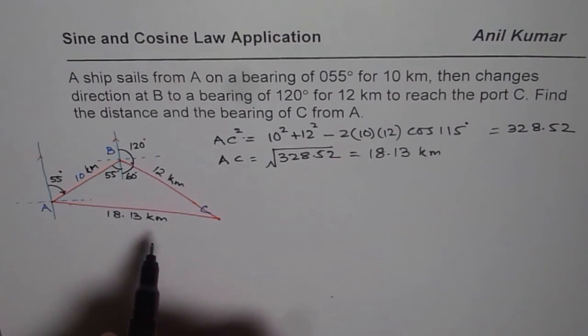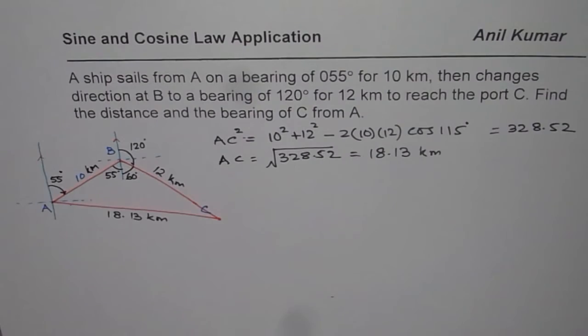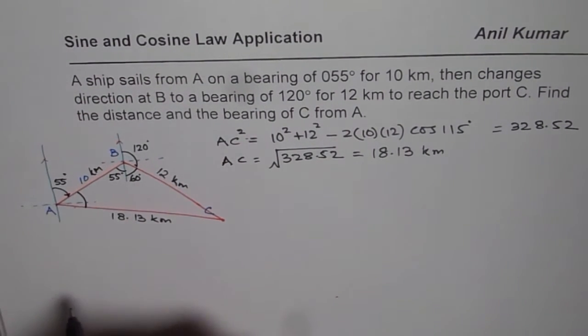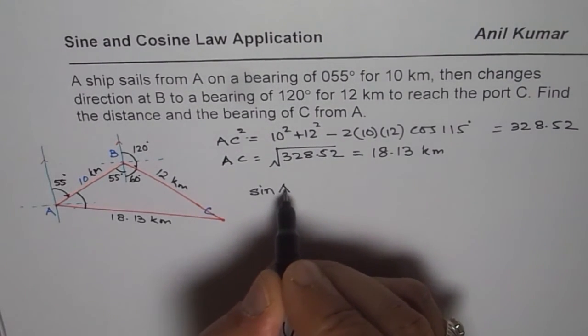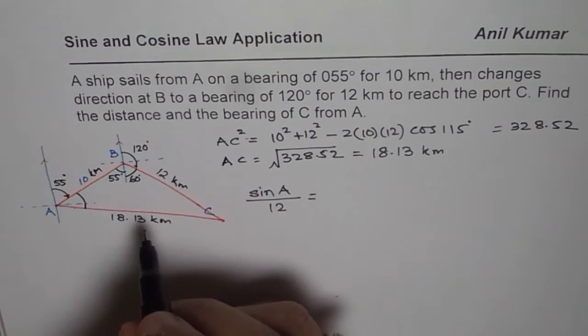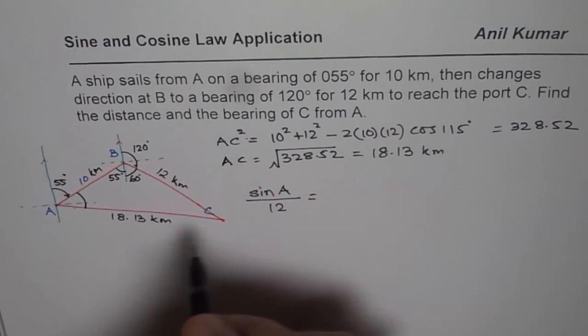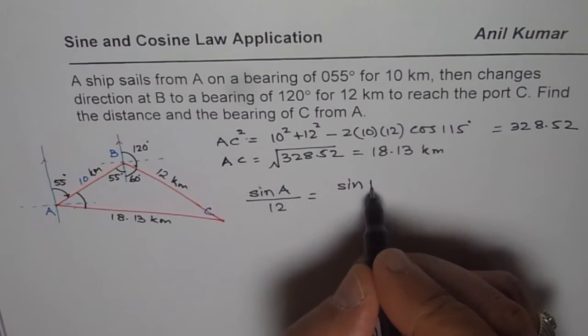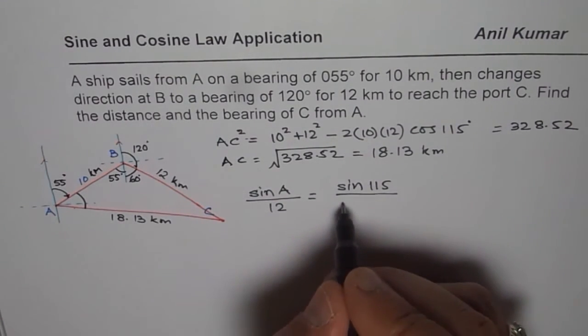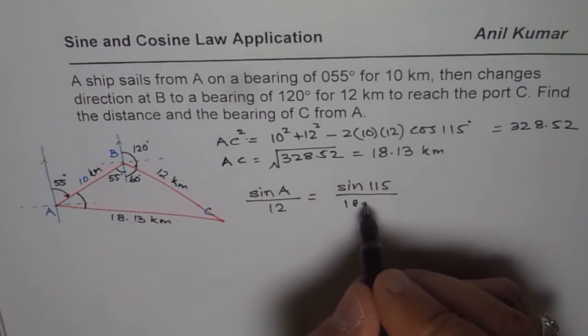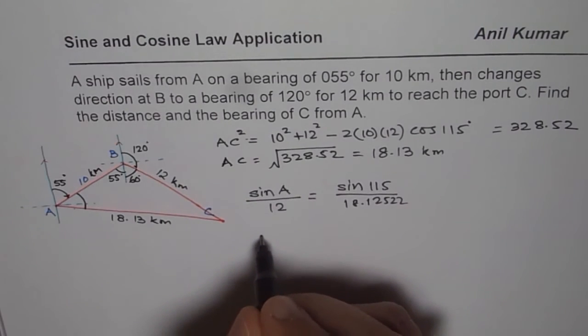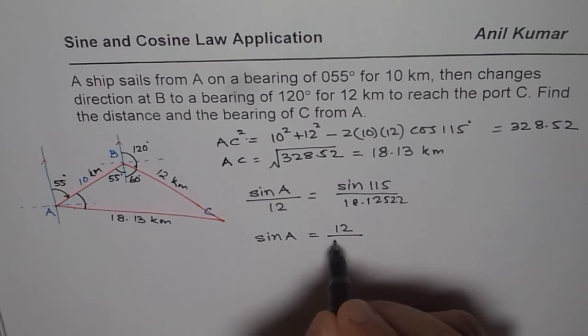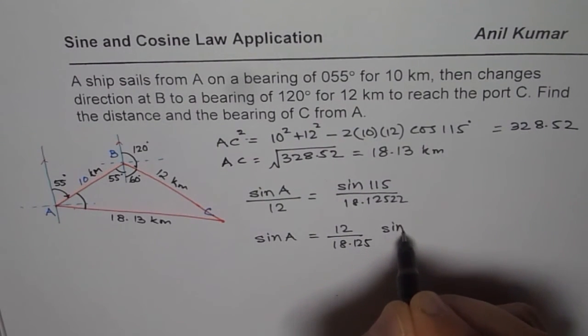So we know the distance between the two points. Now the idea is to get the angle. To find the angle, let us first find this angle. We can use sine law to find the total angle and then we can find from the north by adding that angle. So let's say angle A. Let us apply the sine law now. We have sine of angle A divided by side opposite, which is 12, should be equal to, we know this angle and side ratio, so sine of the angle, which is 115, divided by the side, which is 18 point, so it is better to take four decimal places, 1252. So that is what we have.